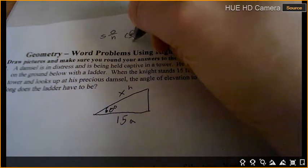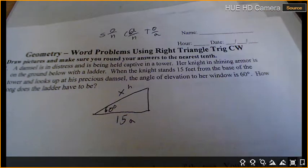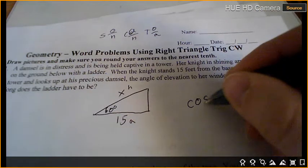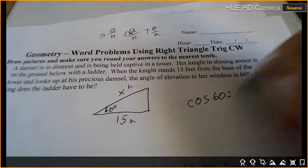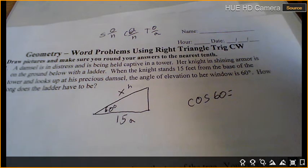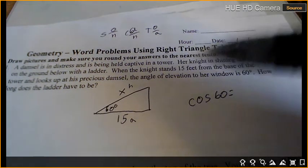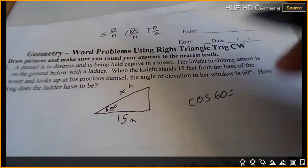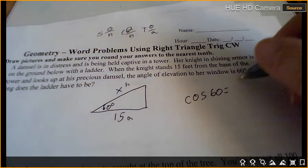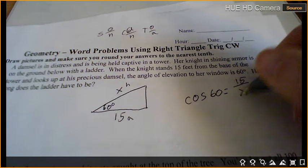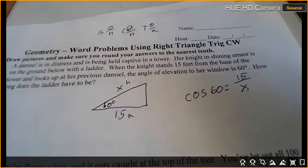So SOH-CAH-TOA. And it is cosine. So cosine of 60 degrees equals... So cosine of 60 equals 15 over x. I know we don't like x on the bottom, but what do we do?